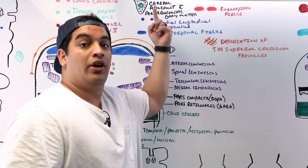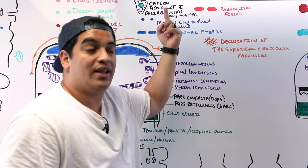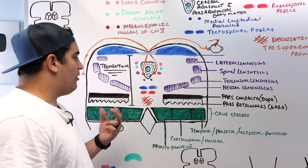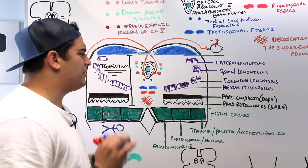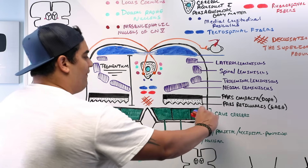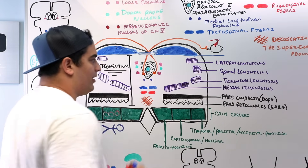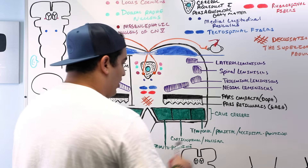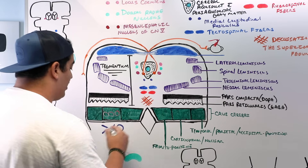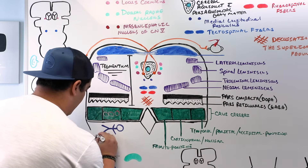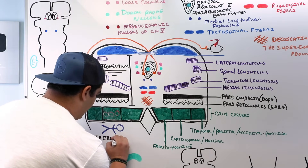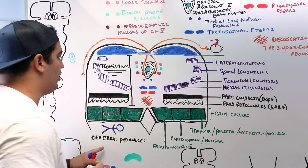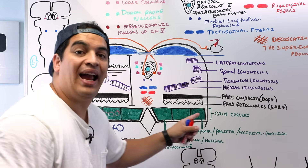Important exam point: the crus cerebri and the tegmentum together make up the cerebral peduncles.